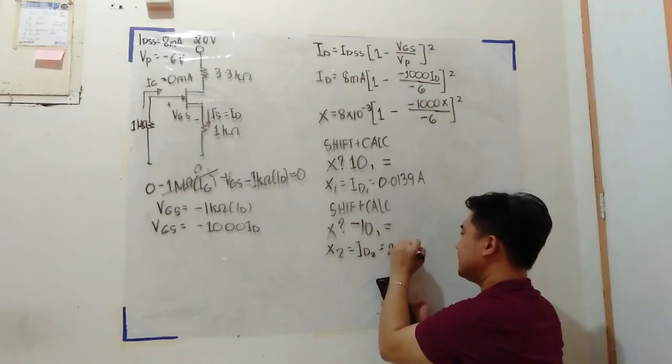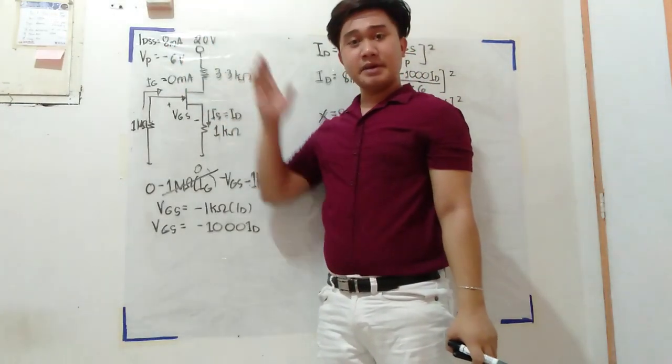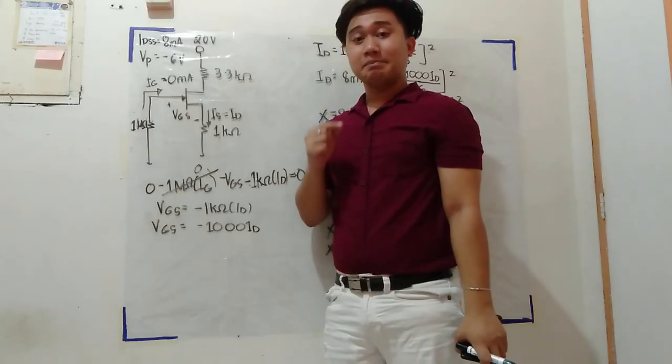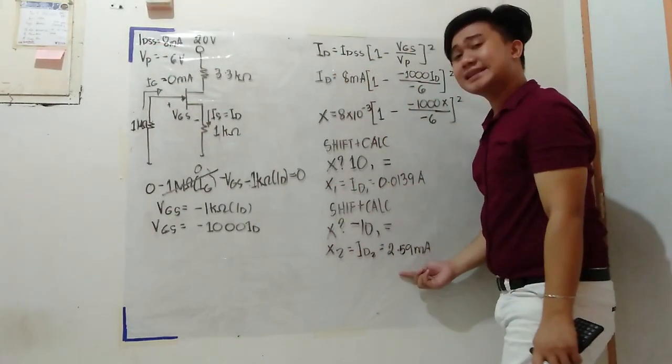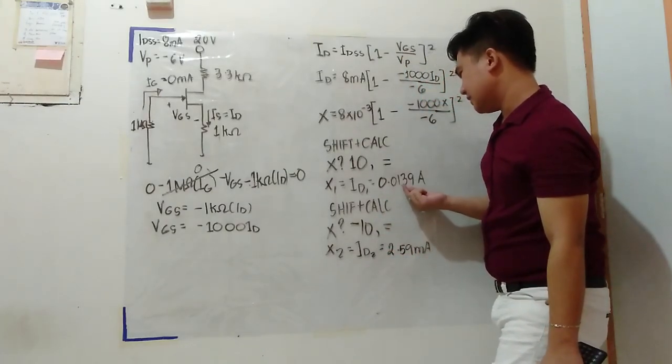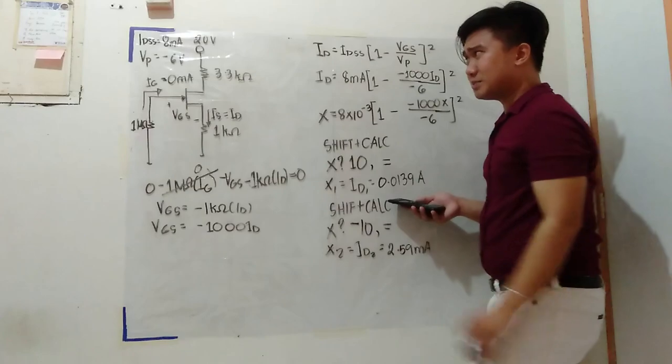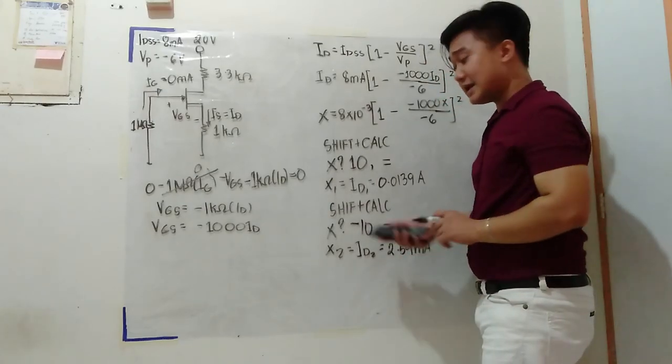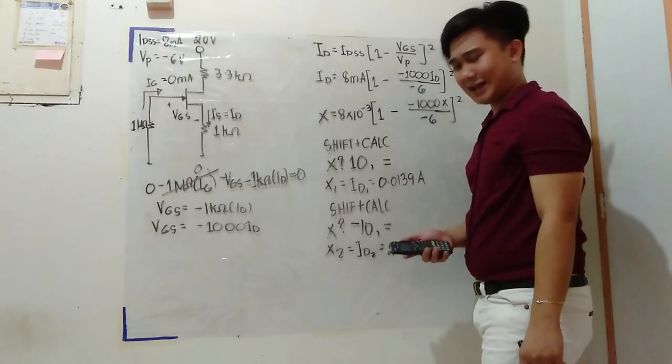Solve for x again. It will ask for the value of x. This time set it to negative 10 and press equal. What comes out here as x2 equals ID2, or 2.59 milliampere. What's our IDSS? 8 milliampere. Remember in JFET the highest current you can get is IDSS. So between these two values, which is valid? The valid one is the one lower than 8 milliampere, because this is around 13.9 milliampere, which is obviously too high for 8 milliampere. So which is valid is the lower one, which is 2.59 milliampere. If you didn't store this value, just write it down so we don't lose it in computation.